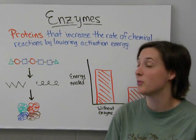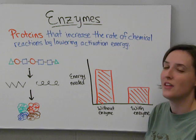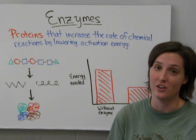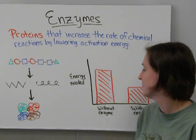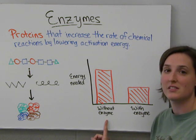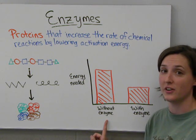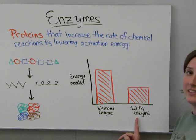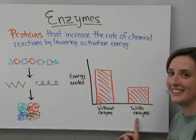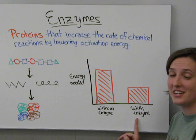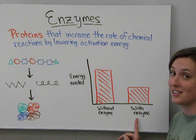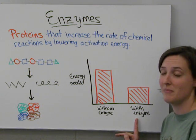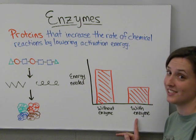Enzymes are proteins that increase the rate of chemical reactions by lowering their activation energy. Without enzymes, the energy needed to start a reaction is fairly great. With enzymes, the energy needed to start the reaction is a lot lower. So this actually makes it a lot easier for many chemical processes to occur.